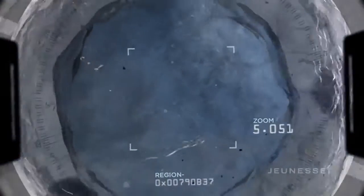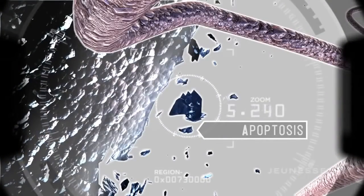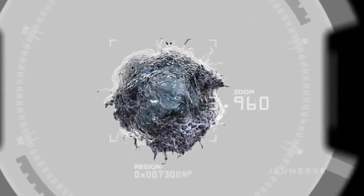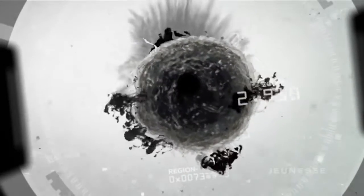When telomeres become too short, our cells can no longer carry out their critical functions. Cells start to self-destruct and eventually die. Scientists call this apoptosis. Cells dying is one thing, but when cells simply stop functioning, they can spew out dangerous free radicals and inflammatory molecules that essentially damage the nearby cells.